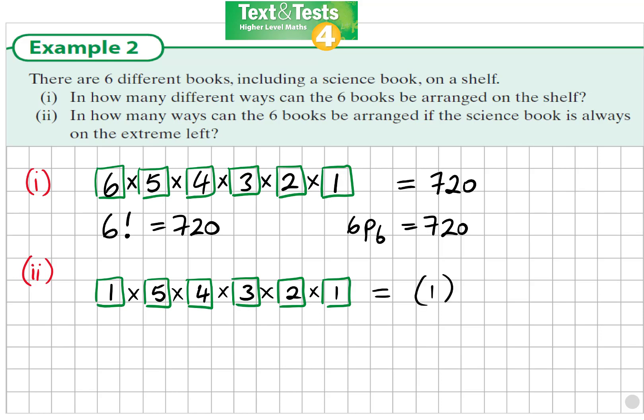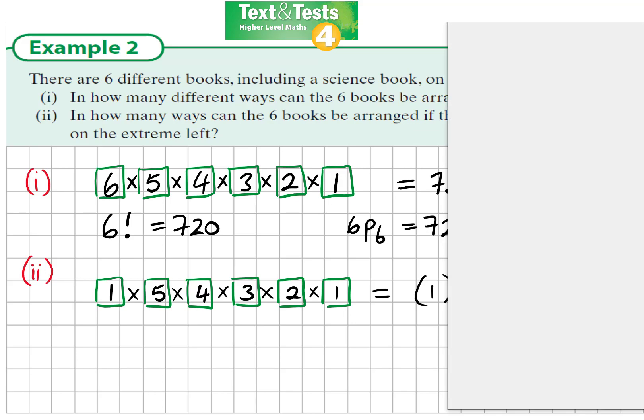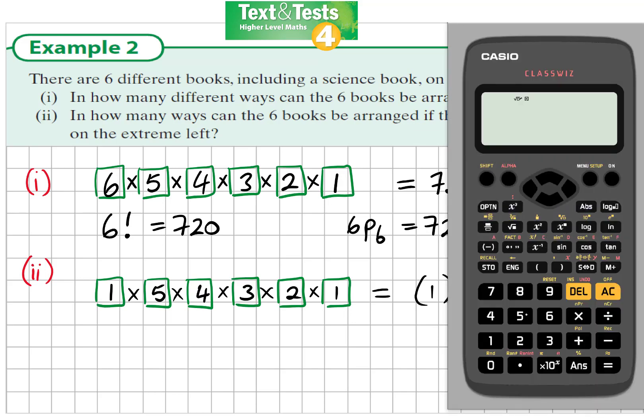So this is one times five factorial. So I would put that into the calculator and I would see that I should get 120. But let's just again show you on the calculator. If I write in five factorial, I see the answer is 120.